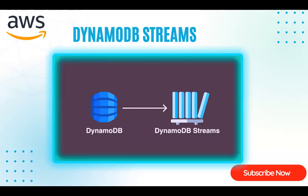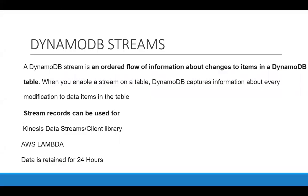Welcome to the channel. In today's video I'll be discussing DynamoDB Streams. DynamoDB Streams is basically an audit flow of information about the changes made to items in a DynamoDB table. Whenever we make any changes to records in the table, it will record those changes. When you enable a stream on a table, it captures information about every modification — whether it's an update or a delete being done on the items. The stream records can be used for Kinesis Data Streams or the client library, and they are retained for 24 hours.